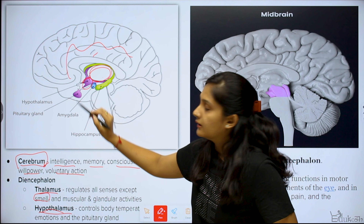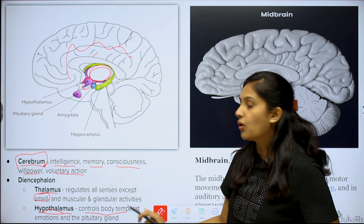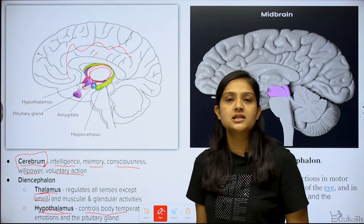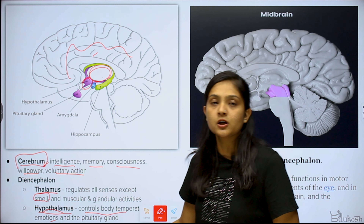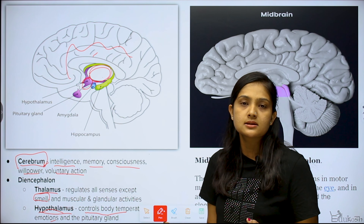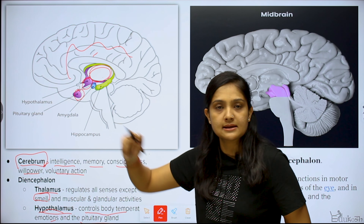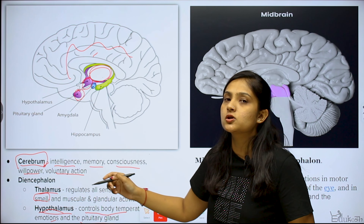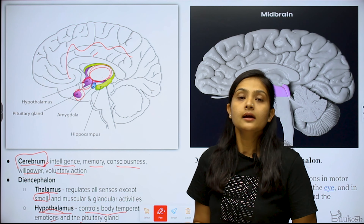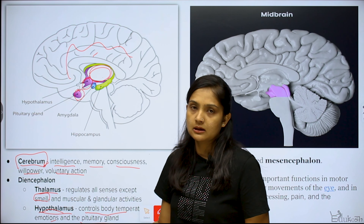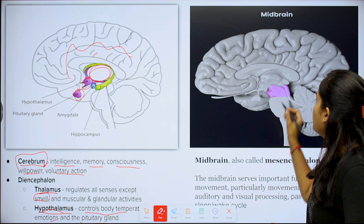The olfactory sense — smell — is directly received by the cerebrum, not by the thalamus. The hypothalamus is a small part of the forebrain that controls body temperature, emotions, pain, thirst, and hunger. It also controls the pituitary gland.